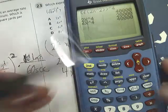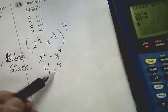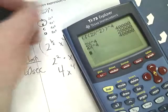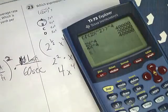40,000 equals 4x to the fourth. Isn't that the answer we got before? It totally is. So if you don't like the other method, you can use this and get the answer to number 23 to be B.